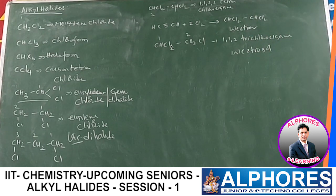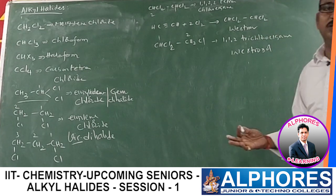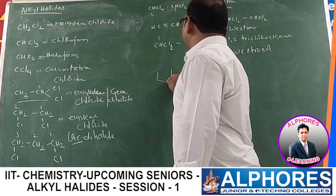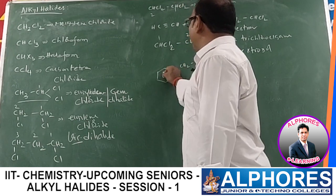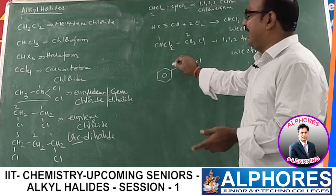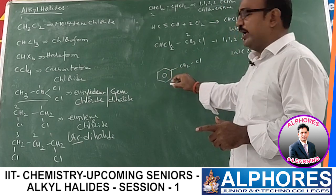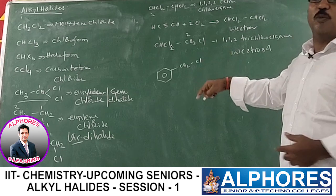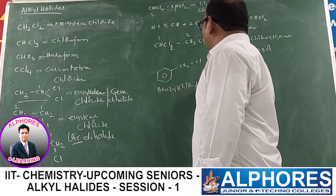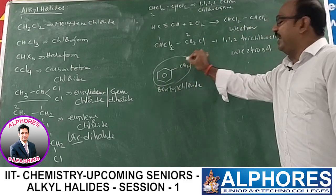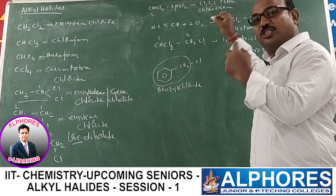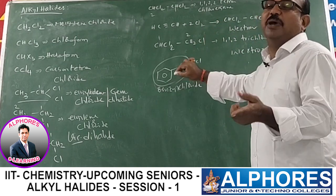Aryl alkyl halides: when a halogen-containing carbon is attached to a phenyl ring, these also show properties of alkyl halides. The compound C6H5CH2Cl is benzyl chloride — the benzyl group is a phenyl group with a CH2 unit. If the benzyl group contains bromine it is benzyl bromide; with iodine, benzyl iodide.